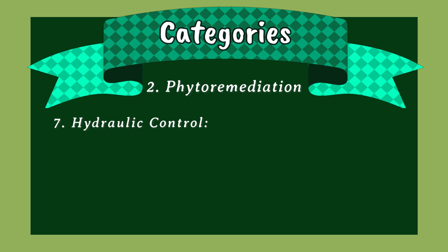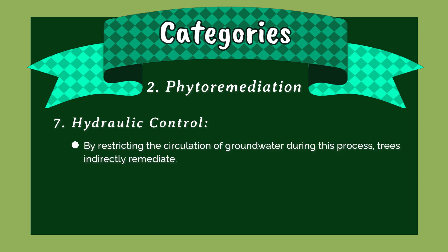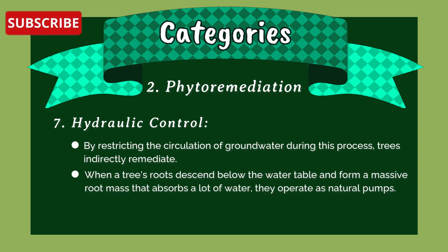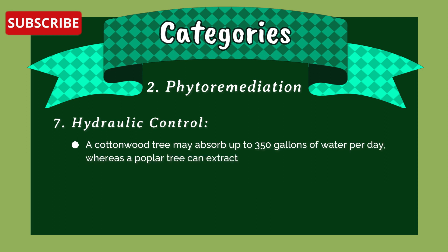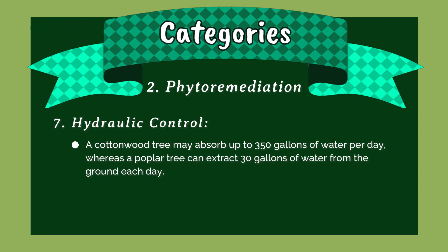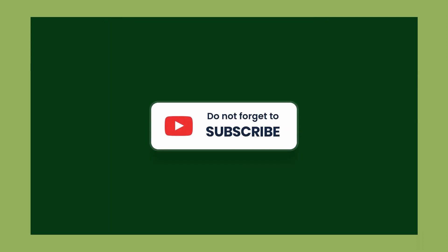(6) Phytodegradation: plants metabolize and eliminate pollutants inside the plant tissues during this process. (7) Hydraulic control: by restricting the circulation of groundwater, trees indirectly remediate. When a tree's roots descend below the water table and form a massive root mass, they absorb large quantities of water and operate as natural pumps. A cottonwood tree may absorb up to 350 gallons of water per day, whereas a poplar tree can extract 30 gallons per day.